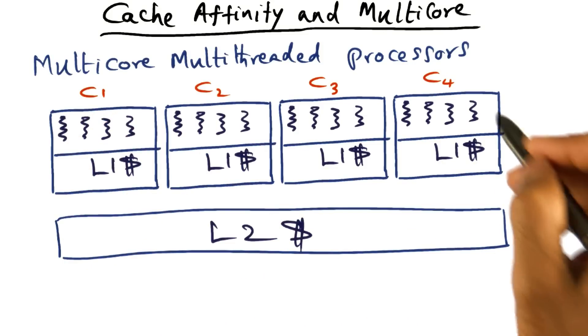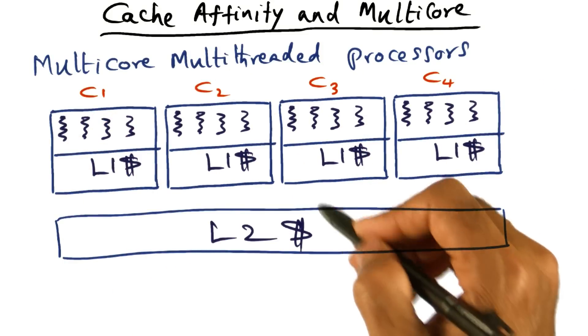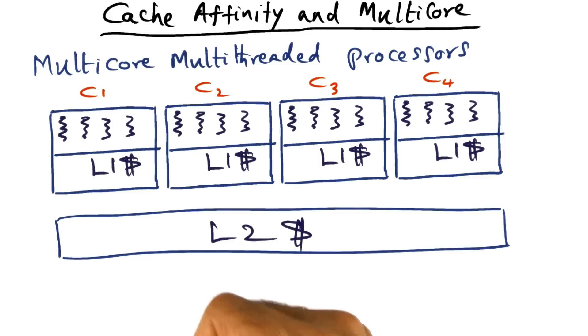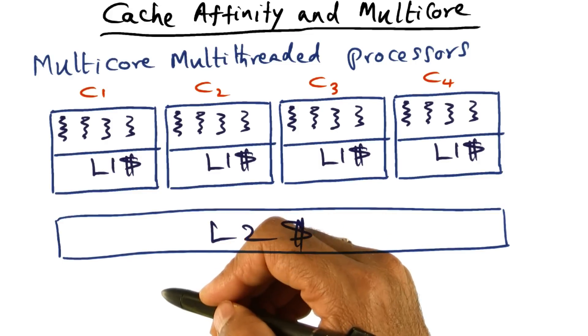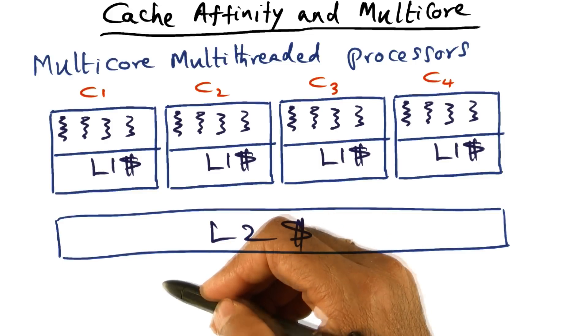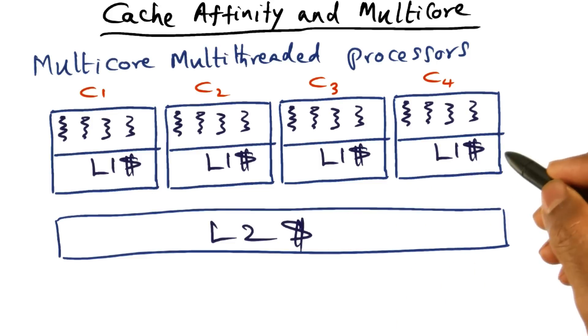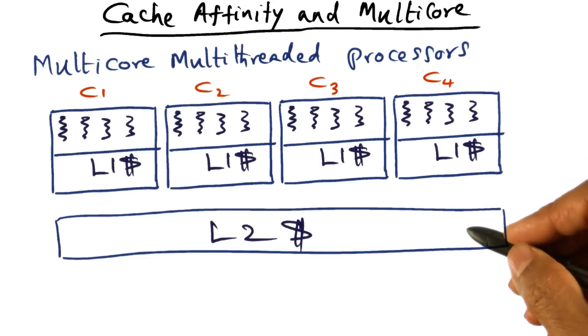If the processor has only these two levels of caches, L1 cache and L2 cache, missing in L2 cache is really bad news. Because then you're going out of the chip, it's a long latency memory operation. And modern multiprocessors may in fact even employ even more levels of caching.